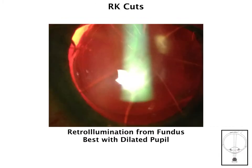Retroillumination isn't useful just for looking at the lens — you can also look at changes in the cornea. When we're looking at RK cuts, because those are so subtle, the best way to tell those is by using the retroillumination technique with a dilated pupil, as you can see in this picture.